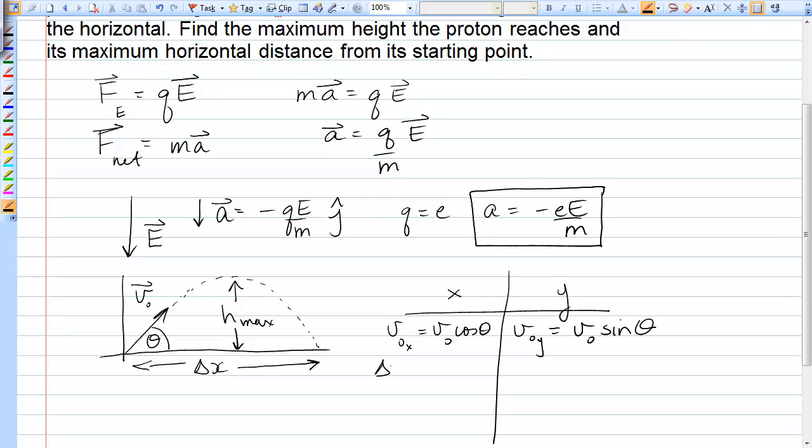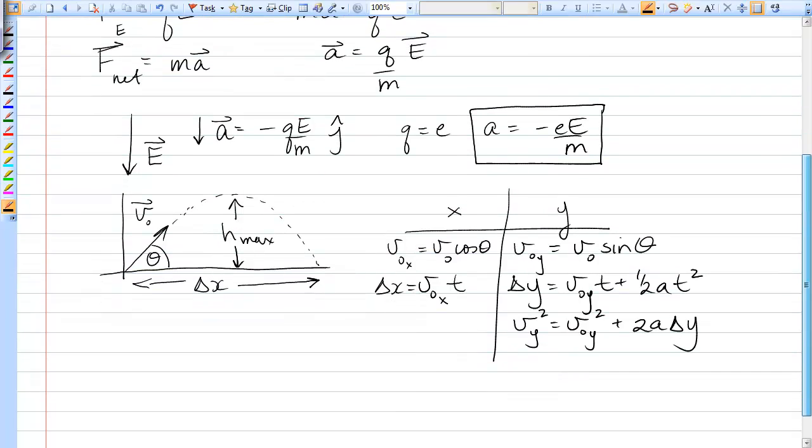The displacement in the X direction is just V0X times T. There is no acceleration in the X direction. The displacement in the Y direction is V0Y T plus one half AT squared. The velocity squared in the Y direction is V0Y squared plus 2A delta Y. Those should be the only equations we need for this problem.